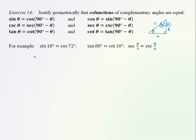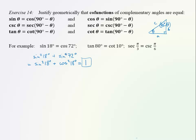For example, to evaluate sin²(18°) + sin²(72°): we can change sin²(72°) into the co-function of the complementary angle. Since 72 and 18 are complementary, sin²(72°) equals cos²(18°). So the expression becomes sin²(18°) + cos²(18°), and by the Pythagorean identity, sine squared plus cosine squared of the same angle equals 1. So the answer is simply 1 — no calculator needed! This works only for complementary angles, but it's a very useful property to know.